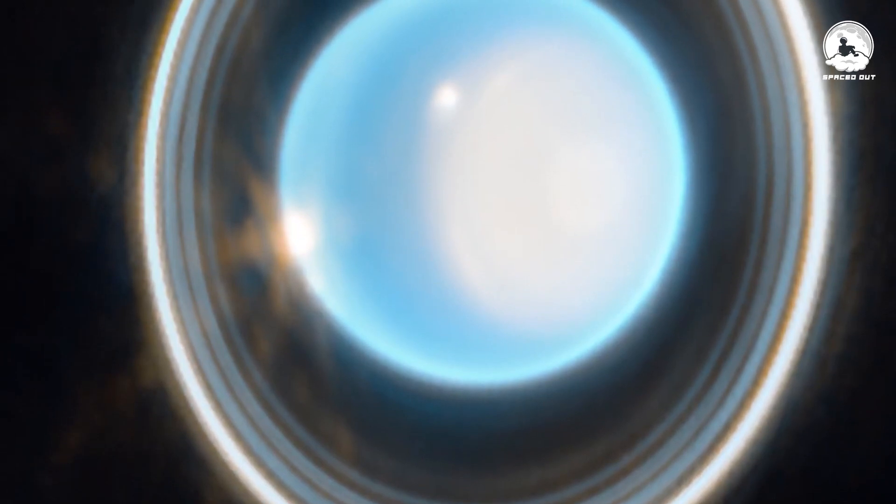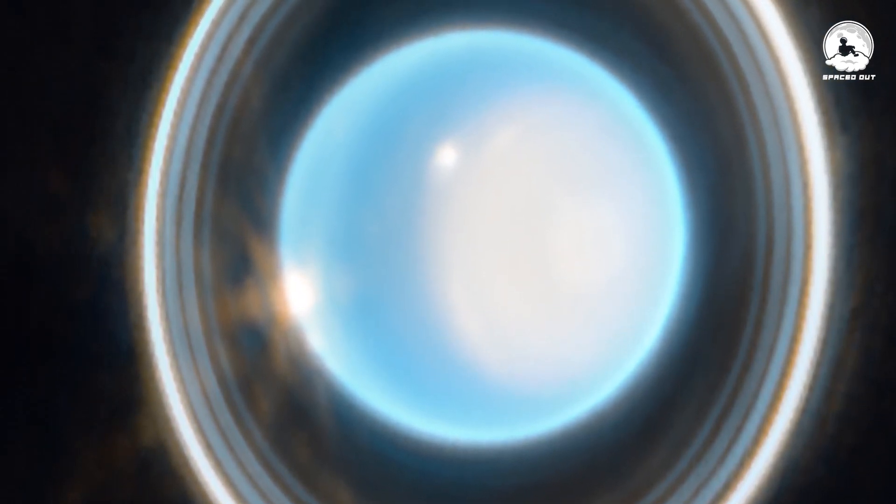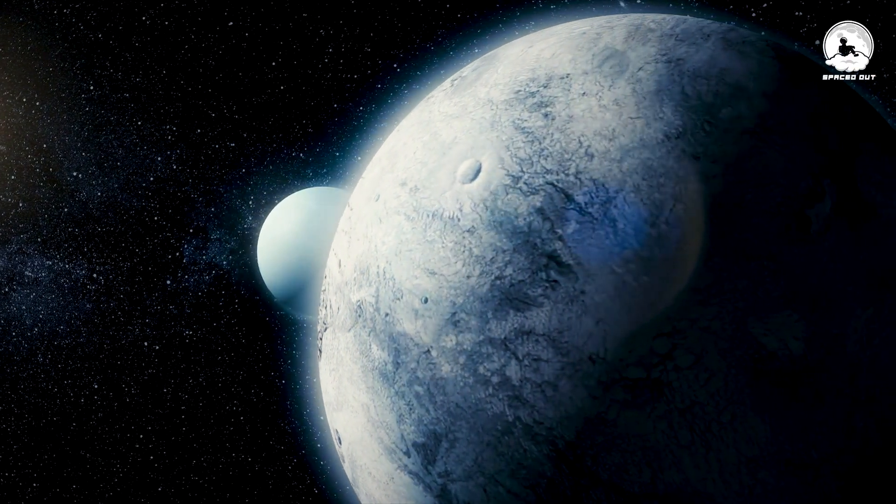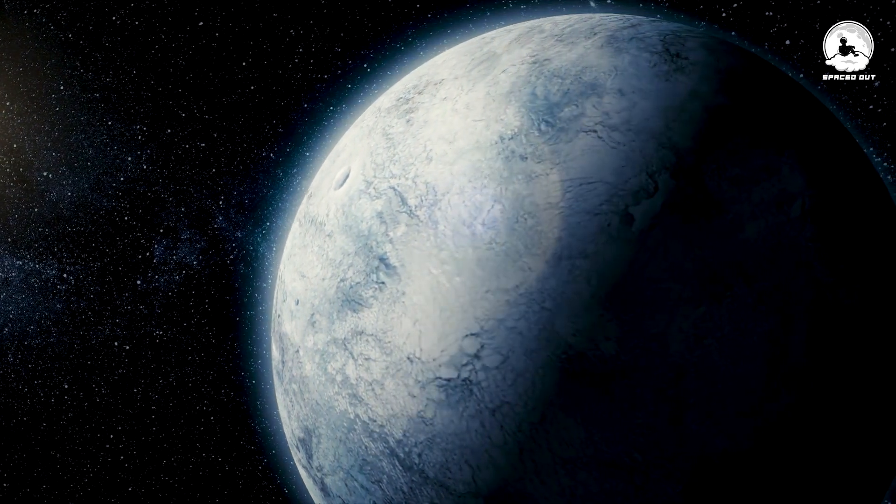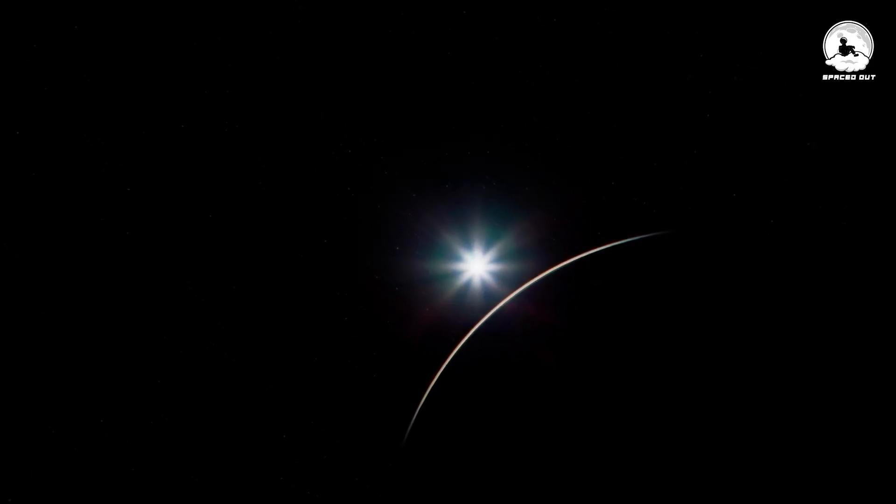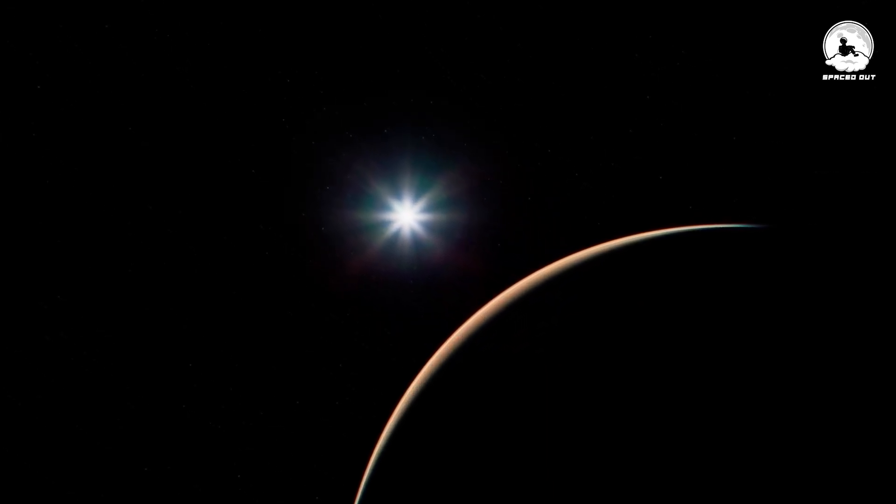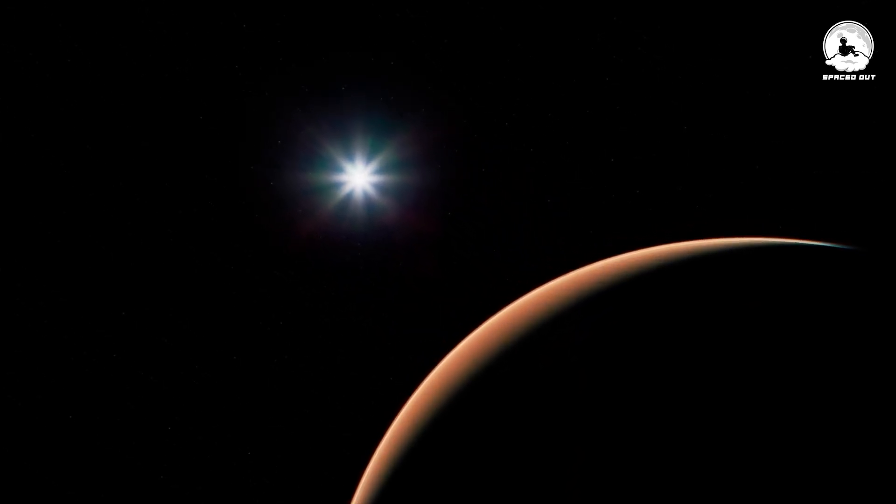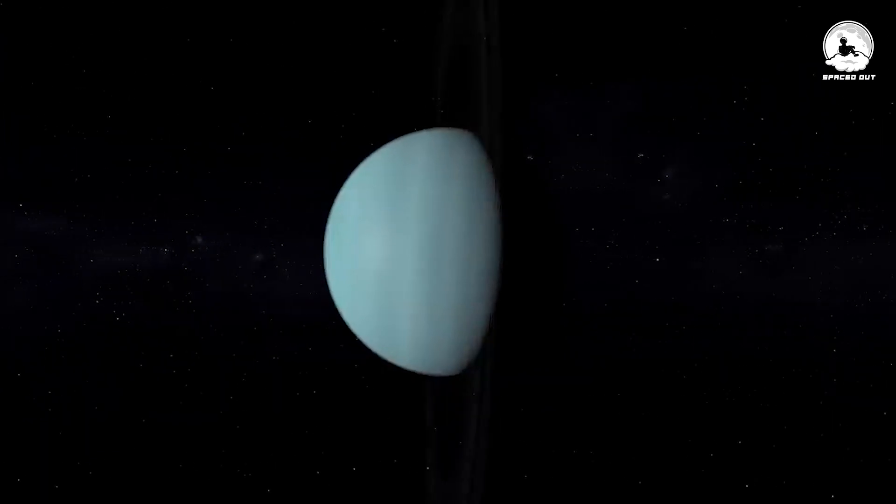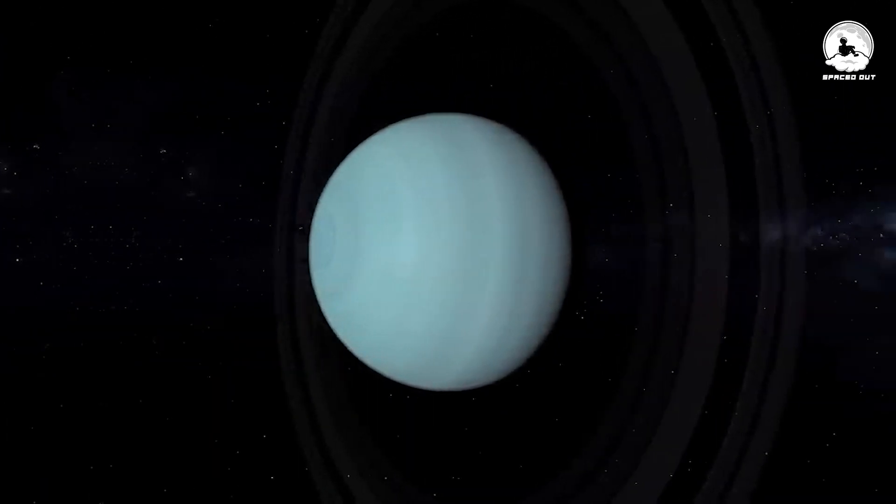Zooming in, Webb also caught sight of a bright polar cap, a noteworthy feature blanketing Uranus's North Pole. This cap transforms with the shifting seasons as the planet spins on its side. Interestingly, the image suggests a change in the polar cap size since its last observation in 2022 during Uranus's northern summer solstice. This implies that the northern hemisphere of Uranus is cooling down and darkening as it moves away from the sun, while the southern hemisphere experiences a warming trend, brightening up as it approaches the sun.